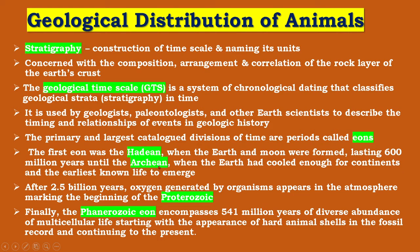The primary and largest catalogue division of time is a period, and these are known as eons — the largest division of time. The first eon was the Hadean, when the earth and moon were formed, which lasted 600 million years until the Archean, when the earth had cooled enough for continents and the earliest known life to emerge. After 2.5 billion years, oxygen generated by organisms appeared in the atmosphere, marking the beginning of the Proterozoic time.